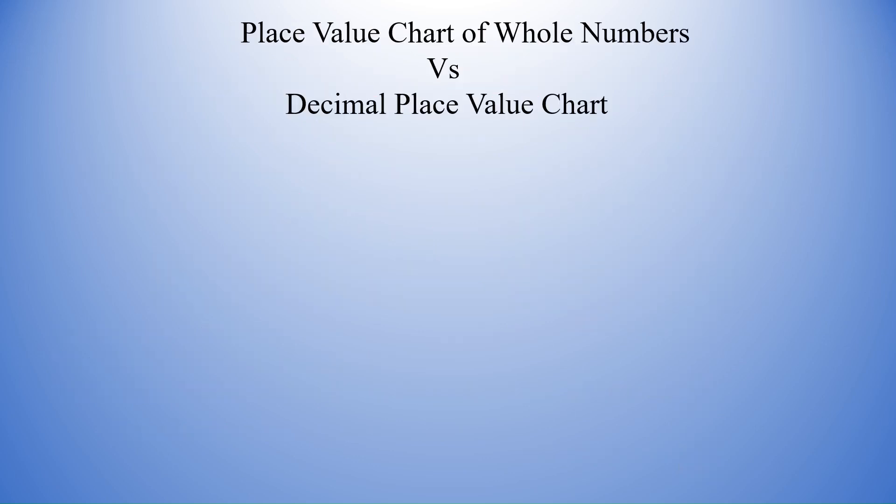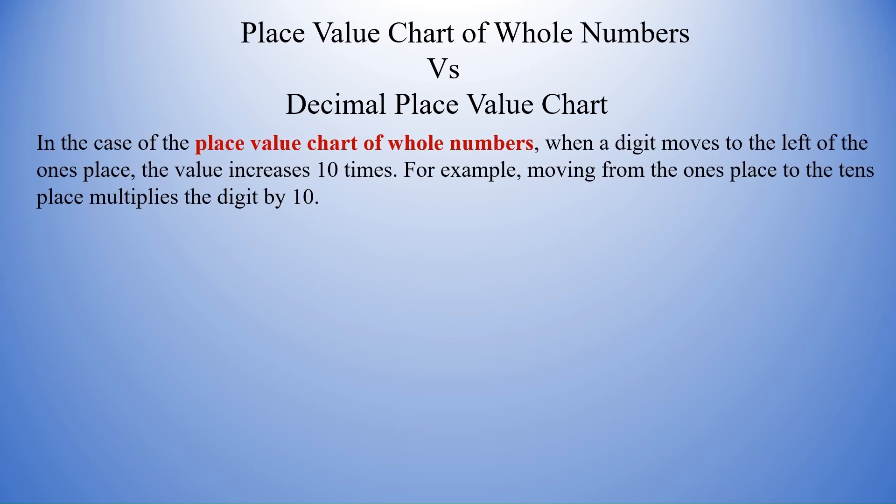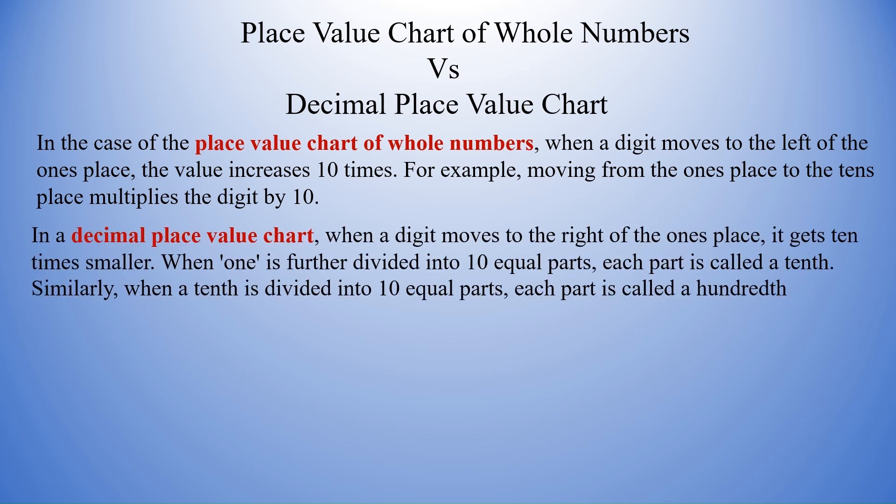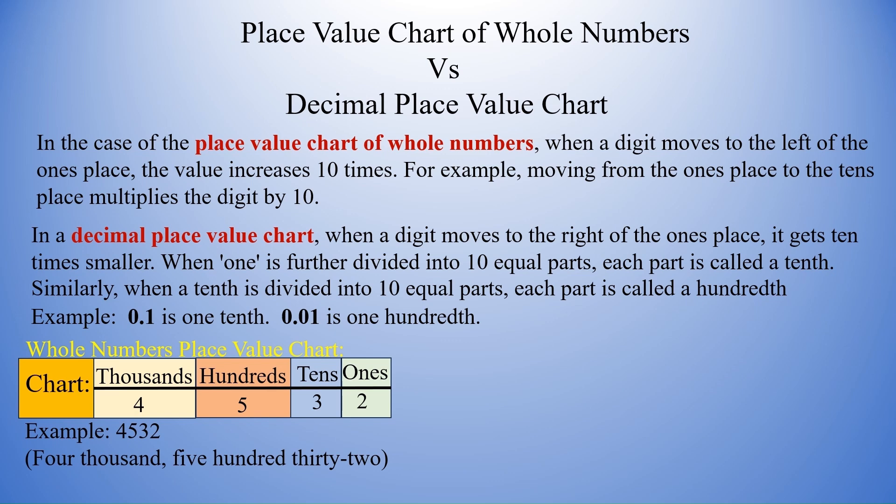Place value chart of whole numbers versus decimal place value chart. Let us do a comparative study. In the case of the place value chart of whole numbers, when a digit moves to the left of the ones place, the value increases 10 times. For example, moving from ones place to the tens place multiplies the digit by 10. Whereas, in the case of a decimal place value chart, when a digit moves to the right of the ones place, it gets 10 times smaller. When 1 is further divided into 10 equal parts, each part is called a tenth. Similarly, when a tenth is divided into 10 equal parts, each part is called a hundredth. For example, 0.1 is one tenth and 0.01 is one hundredth.